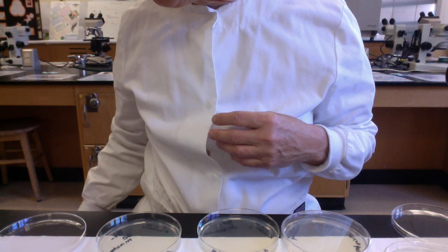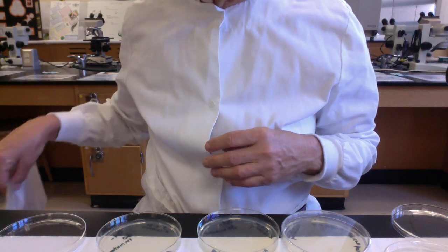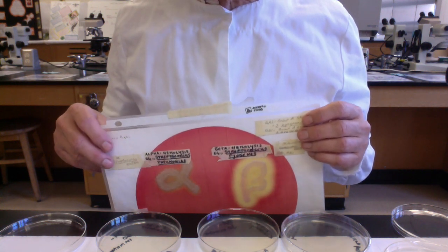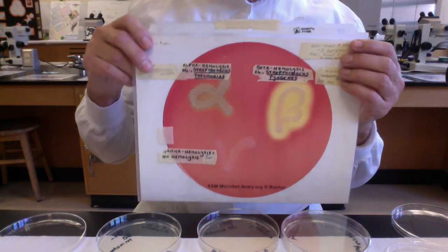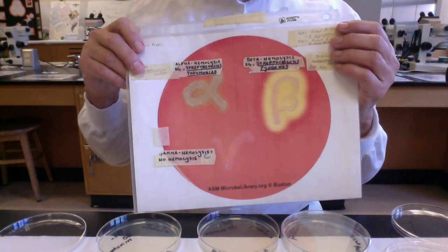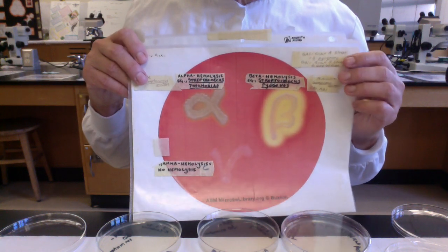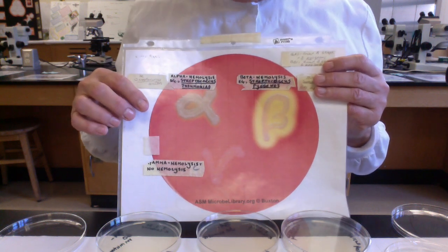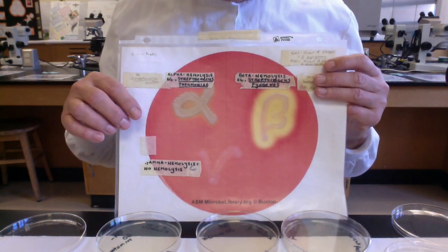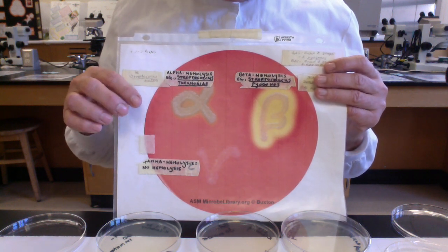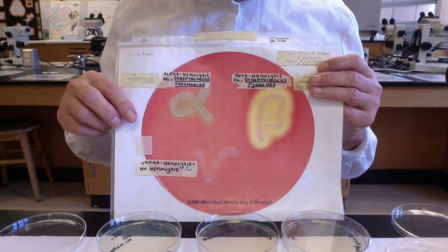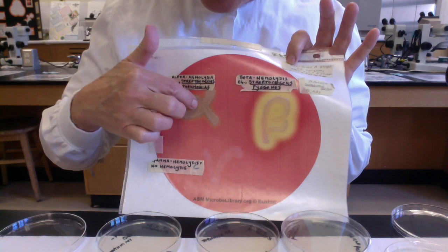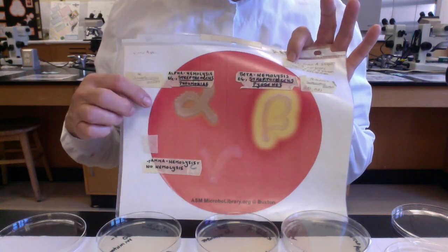So hemolysis is the lysis of red blood cells, and since our blood agar has red blood cells in it, we'll see three different types of hemolysis. And I don't know if this is going to be that great, but we'll see if we can use this. And again folks, we'll do a PowerPoint so we'll have better images on the PowerPoint. So there's three types of hemolysis, and this is a really cool plate that was in the ASM American Society for Microbiology Microbe Library. And what they did, this is a blood plate, and they've taken three different types of bacteria and they've inoculated the bacteria using the Greek alphabet for the type of hemolysis.